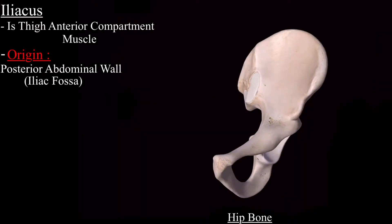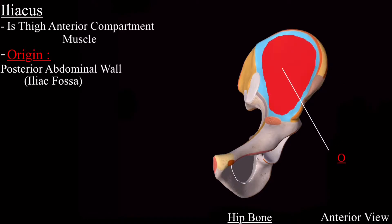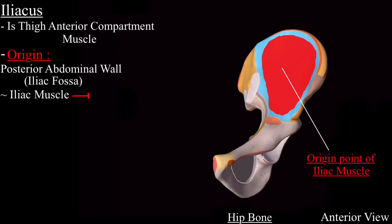This is an isolated hip bone with the interior view. The whole green region is the iliac bone and this blue is the iliac fossa, from where the iliacus muscle originates. It is very easy to remember — the iliacus muscle originates from the iliac fossa. The name of the muscle gives us a clue about its origin.